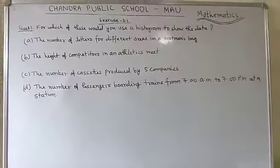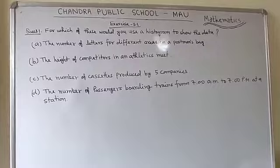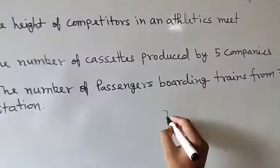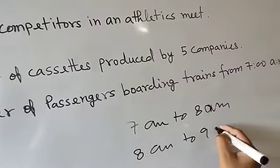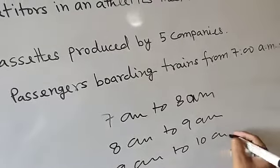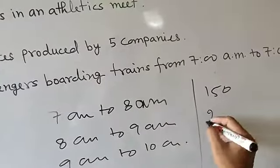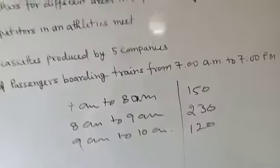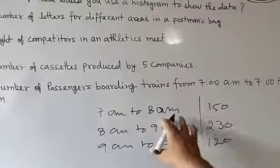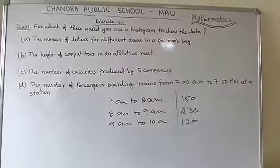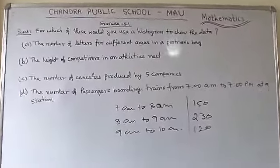Option D is the number of passengers boarding trains from 7 a.m. to 7 p.m. at a station. If you collect data for each time interval — 7 a.m. to 8 a.m., 8 a.m. to 9 a.m., 9 a.m. to 10 a.m. — for example 230 passengers and 120 passengers respectively, you can make group data for each interval. So you can make a histogram for this condition.